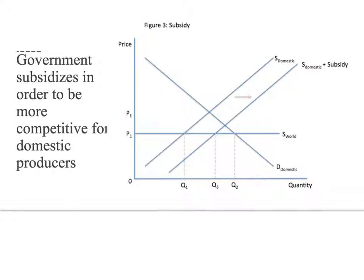Now let's look at the effect of a subsidy. If the government subsidizes domestic industries to make them more competitive against foreign producers, and the world supply is below equilibrium so we are importing, the subsidy increases domestic supply. This lessens the gap between domestic supply and quantity demanded, reducing the amount we need to import while increasing the quantity supplied by domestic producers.